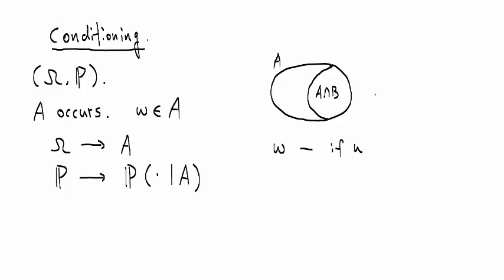If omega is not in A, then that would change into, if you observe A, that means omega has to be in A, but for any omega that's not in A, that's never going to occur anymore. So the probability goes to zero.